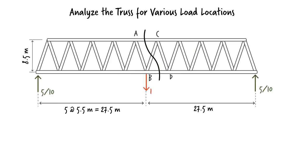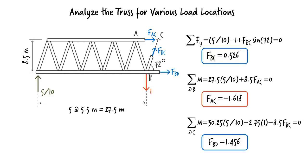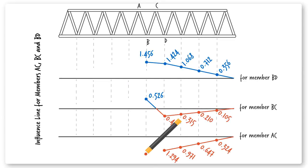Note the switch in the sign of the axial force in member BC when the load reaches joint B. The member goes from compression into tension. This shift is reflected in the influence line by a jump in value from negative 0.421 to positive 0.526.